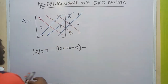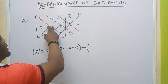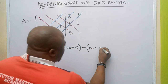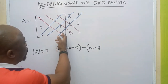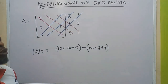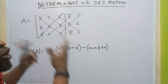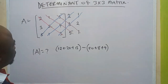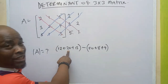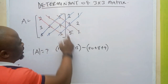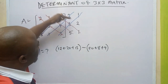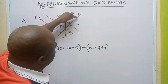Minus the negative diagonals: 5 times 2 is 10, times 5 is 50. Then 1 times 4 is 4, times 2 is 8. Then 3 times 3 is 9, times 1 is 9. Let's verify: 3 times 2 is 6, times 2 is 12; 5 times 4 is 20, times 1 is 20; 1 times 3 is 3, times 5 is 15. Then 5 times 2 is 10, times 5 is 50; 1 times 4 is 4, times 2 is 8; 3 times 3 is 9, times 1 is 9.